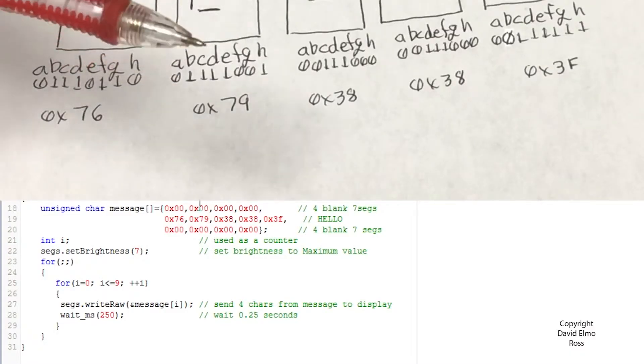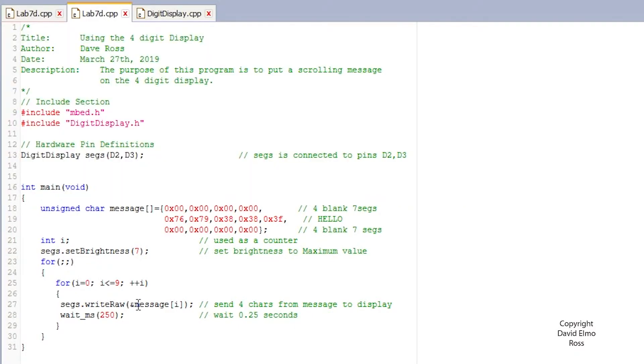Now, that's why we've come up with these numbers here. It's 76, 79, 38, 38, and 3F. And what we want to do is put up the actual message here.